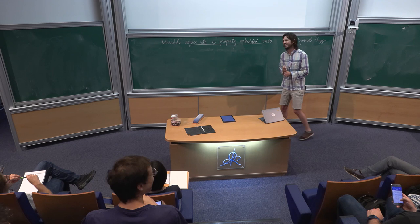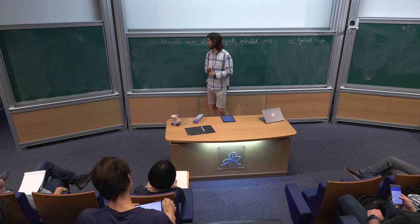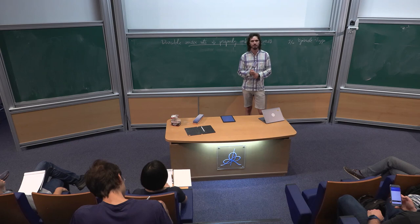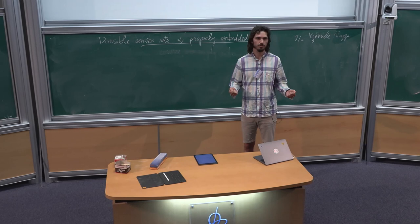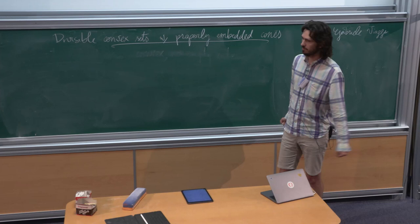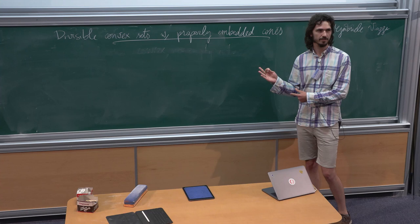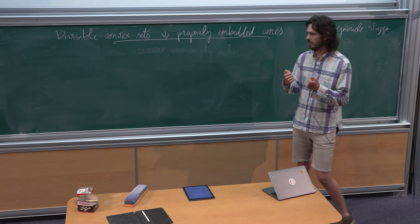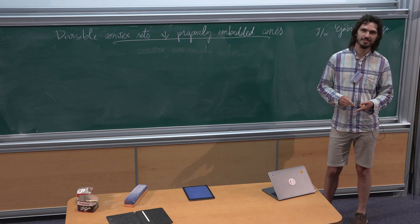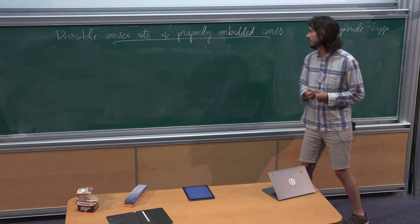I'm going to talk about the topic of divisible convex sets. The plan of the talk will be the following: I will first recall the famous and motivating examples of divisible convex sets, then recall the general definition and the important properties, and then state our result. I can state it now actually — we construct new kinds of divisible convex sets. For those who know the words already, we construct non-symmetric, irreducible, non-strictly convex, divisible convex sets in every dimension at least three. I will explain those words.